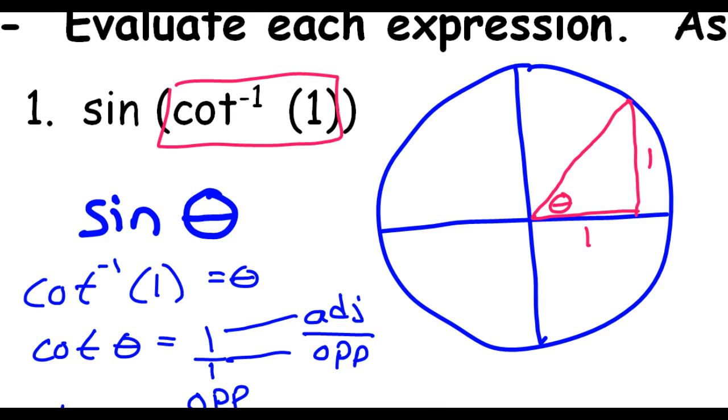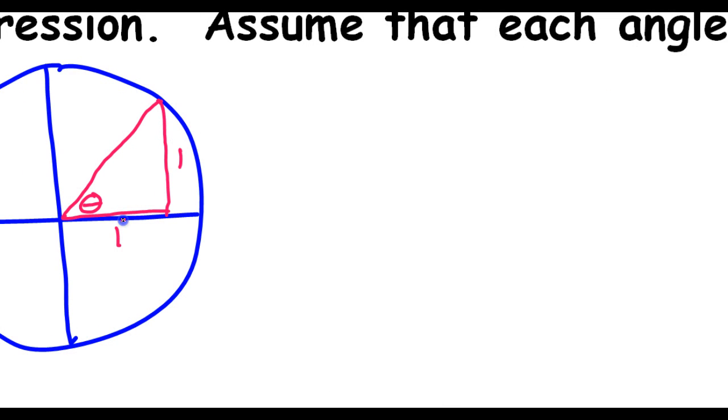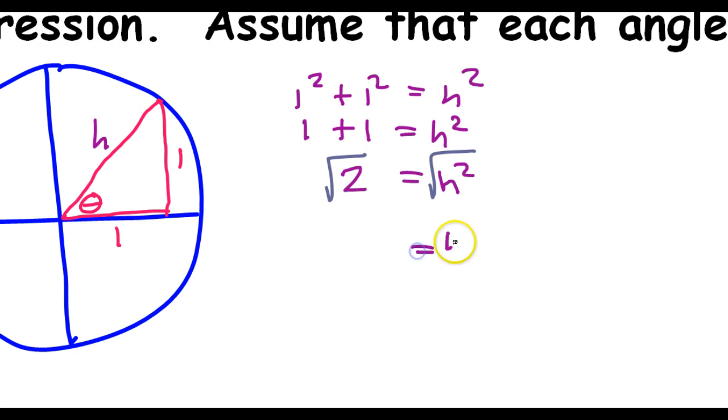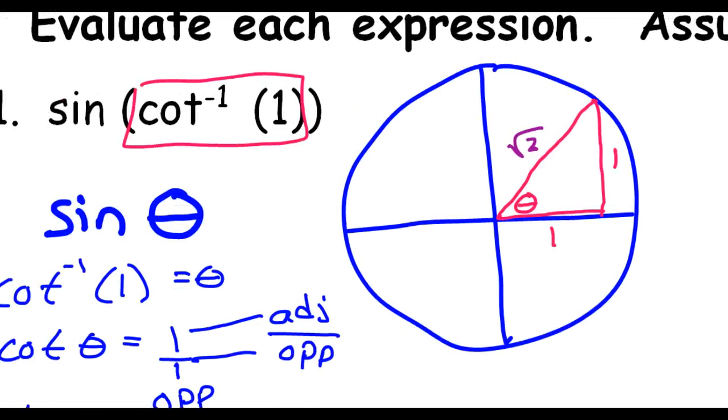So, what will the hypotenuse here be? Well, we could solve this using the Pythagorean theorem if we needed to. If this is the hypotenuse, then a squared plus b squared equals c squared becomes 1 squared plus 1 squared equals the hypotenuse squared. So that's just 1 plus 1 is equal to the hypotenuse squared. So that means 2 is equal to the hypotenuse squared. And once you take the square root of both sides, then you realize that the hypotenuse is radical 2. We may or may not need that value, but if you know both legs and the hypotenuse, then you can find the value of any trig function.